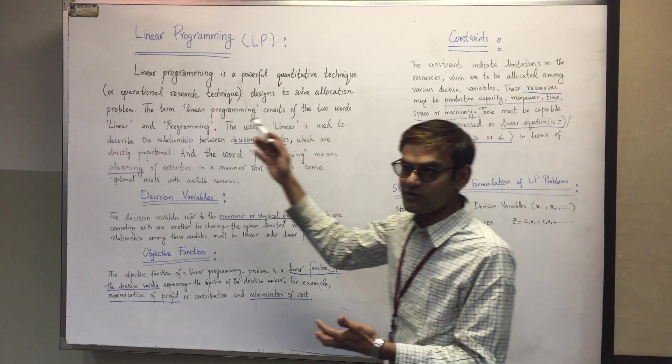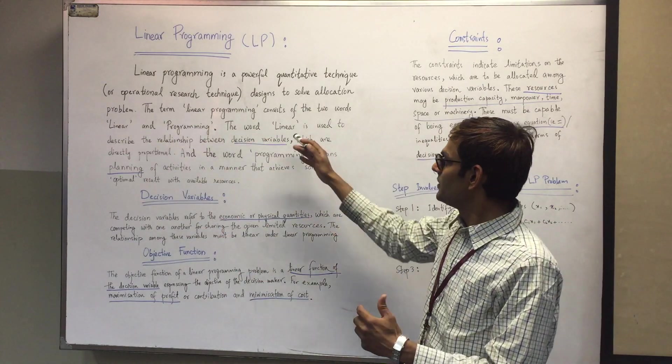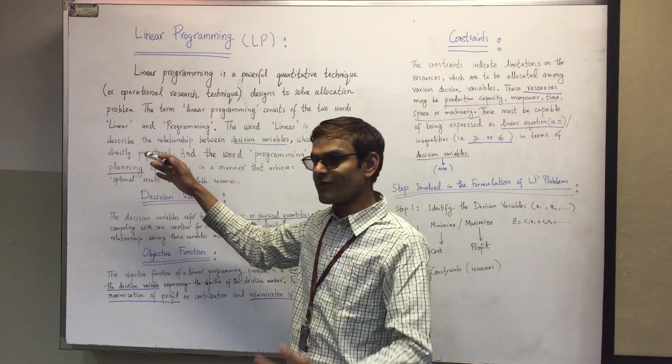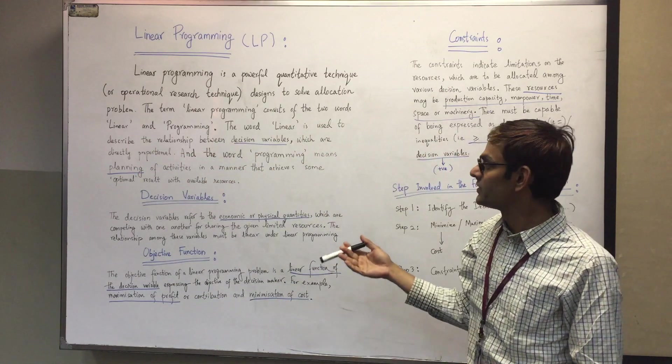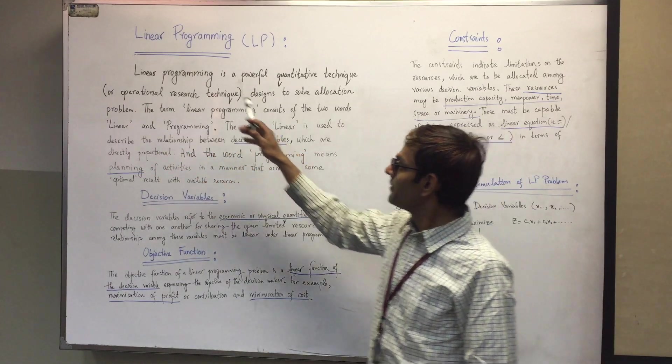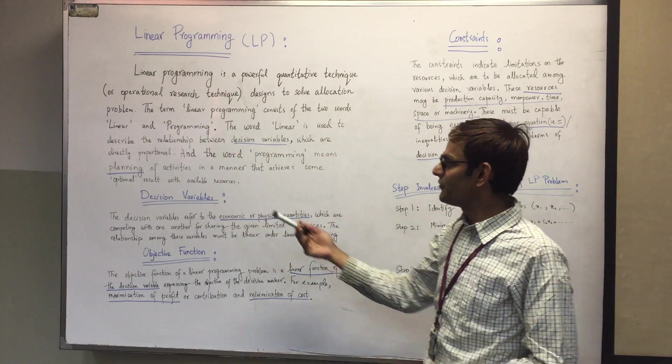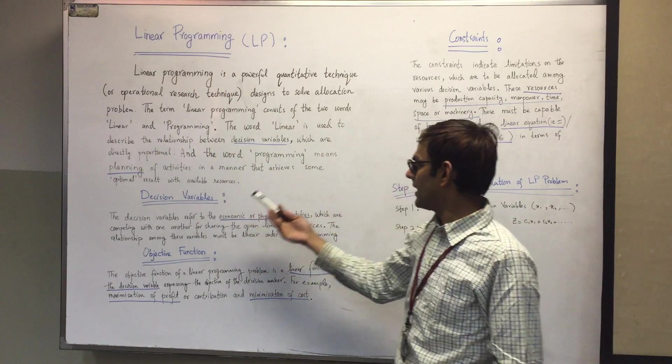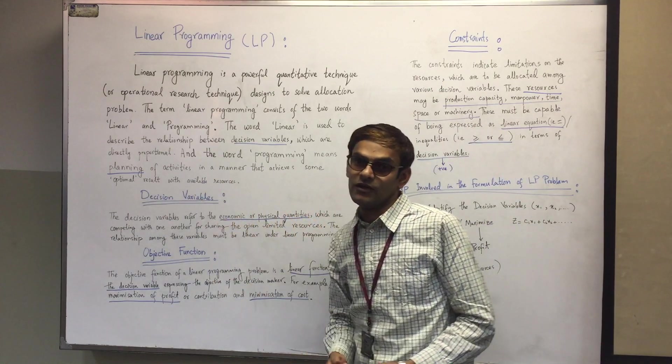Linear programming consists of two words: linear and programming. The word 'linear' describes the relationship between decision variables which are directly proportional. The word 'programming' means planning activities in a manner that achieves optimal results with limited resources.